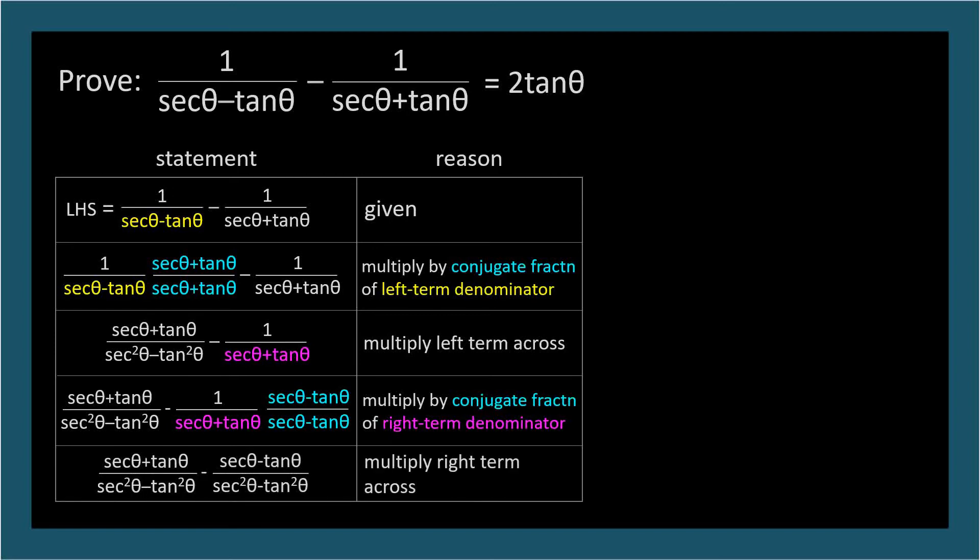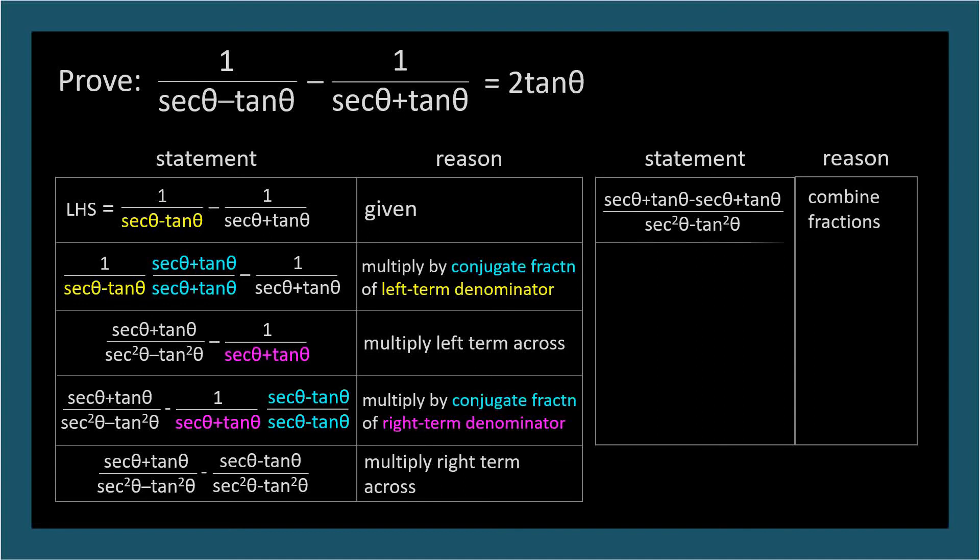Now we have two fractions with the same denominator, so we can combine their numerators. Be careful, since the second fraction is subtracted. All of its signs flip. So we get secant theta plus tangent theta minus secant theta plus tangent theta. The secants cancel out, and we end up with two times tangent in the numerator after simplifying.